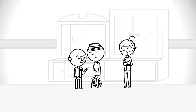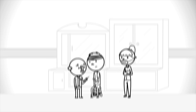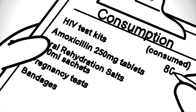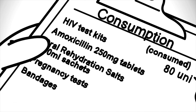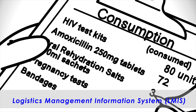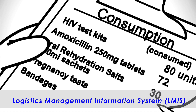Consumption data refers to the actual quantity of health commodities dispensed to patients. It is often considered the best data source for forecasting because it tells us how much of a product was consumed in the past, without the need for conversions. Common sources of consumption data are facility-based stock records, such as LMIS reports.